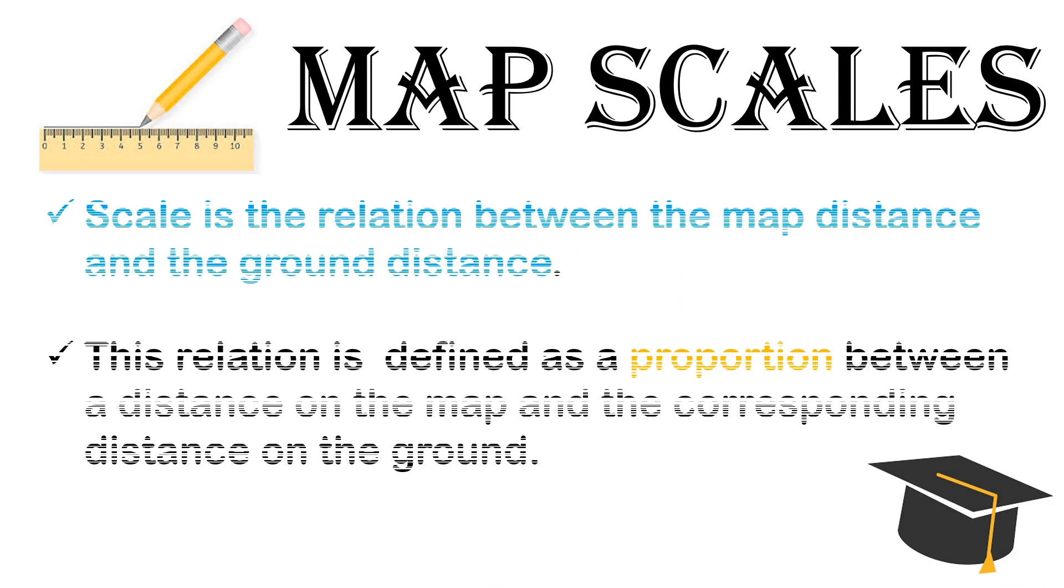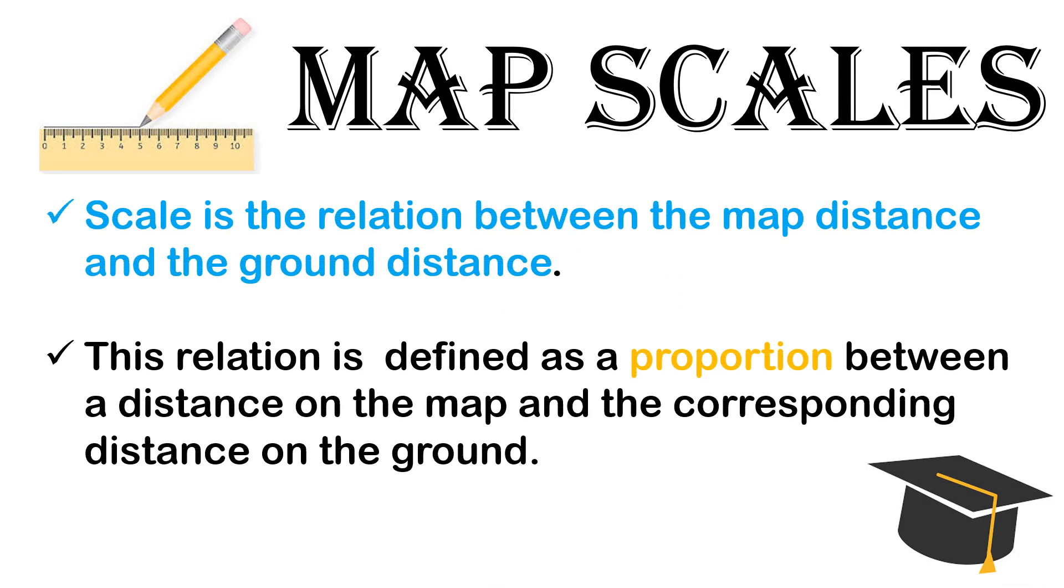The next important component of a map is the scale. Scale is the relationship between the map distance and the ground distance. The relation is defined as a proportion between a distance on the map and the corresponding distance on the ground.